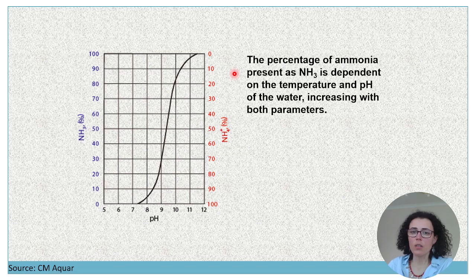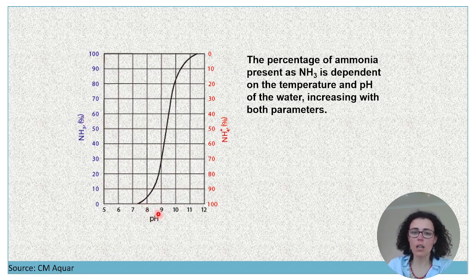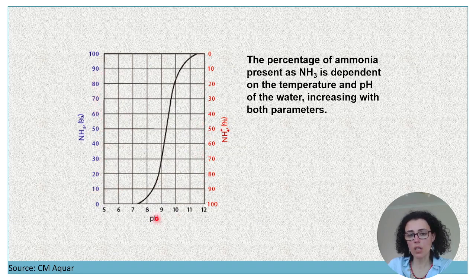Remember, total ammonia as nitrogen (TAN) is the sum of molecular ammonia and ammonium cation. The percentage of the molecular form present depends on both temperature and pH, and increases with both. If you have a pH below 7, you have almost no toxic component to the TAN. But the biofilter also needs a minimum pH of 7 to operate, so you have two counter forces. As pH increases, the less toxic ammonium cation decreases, while the more toxic molecular ammonia increases.